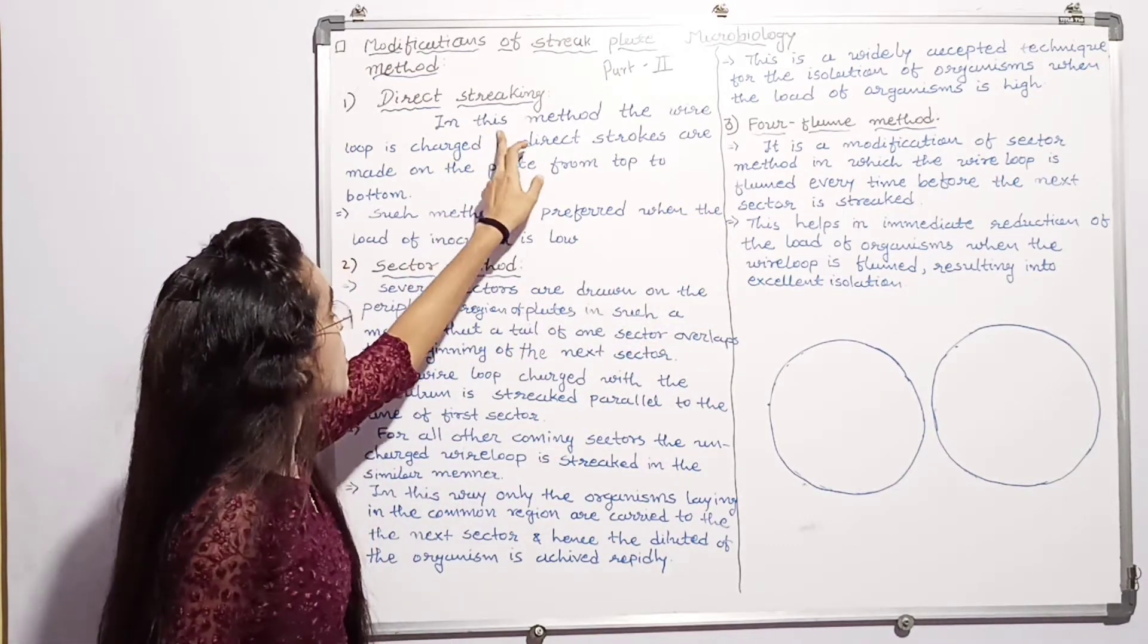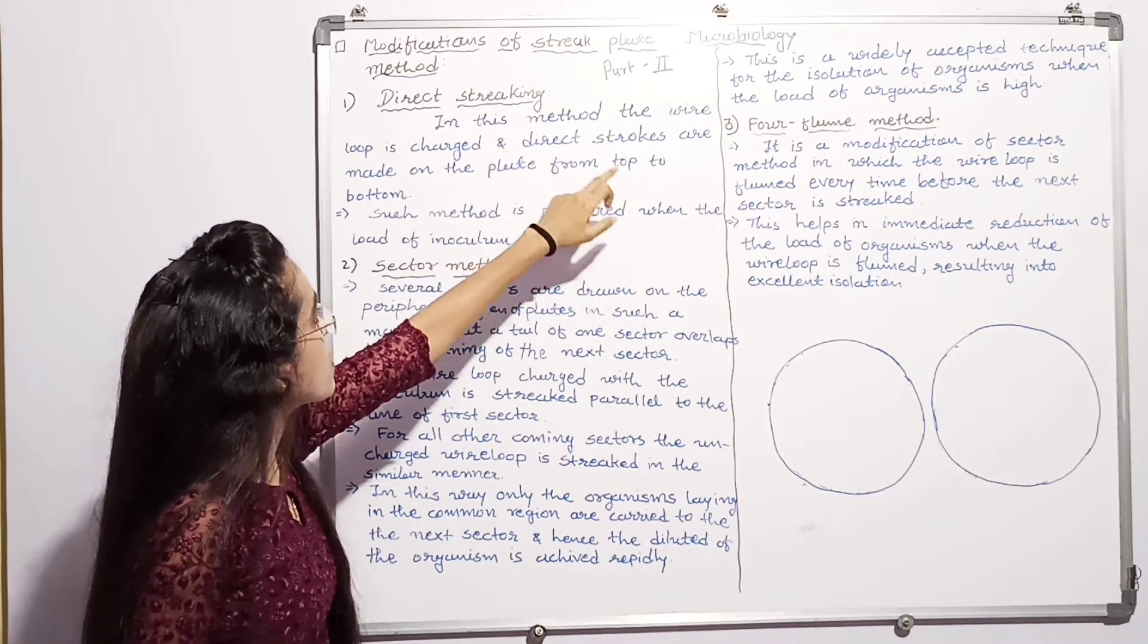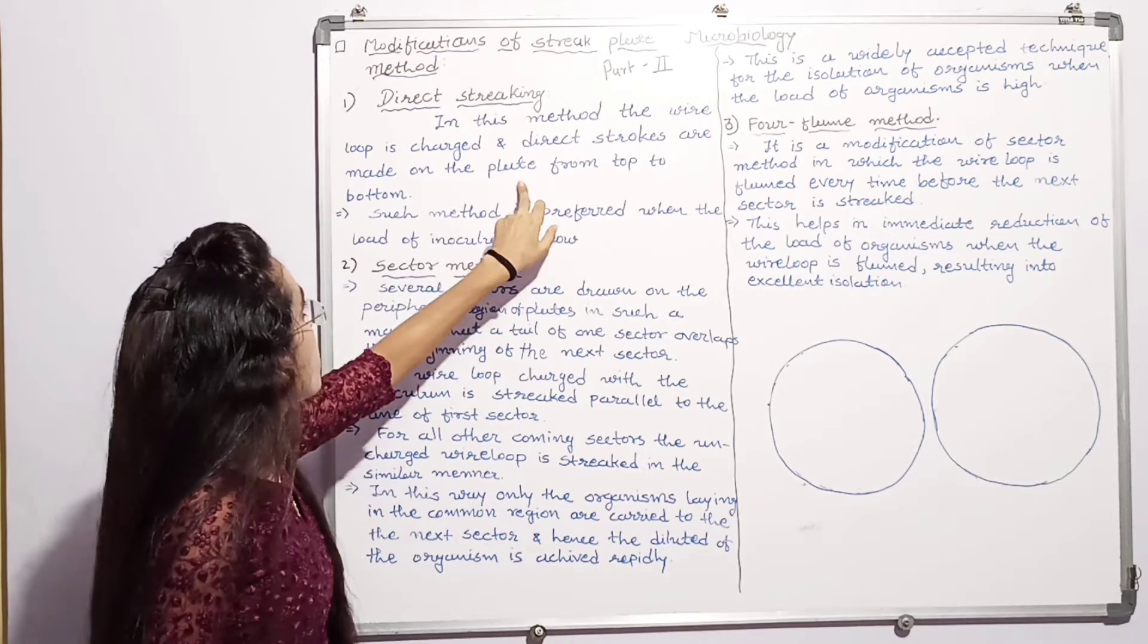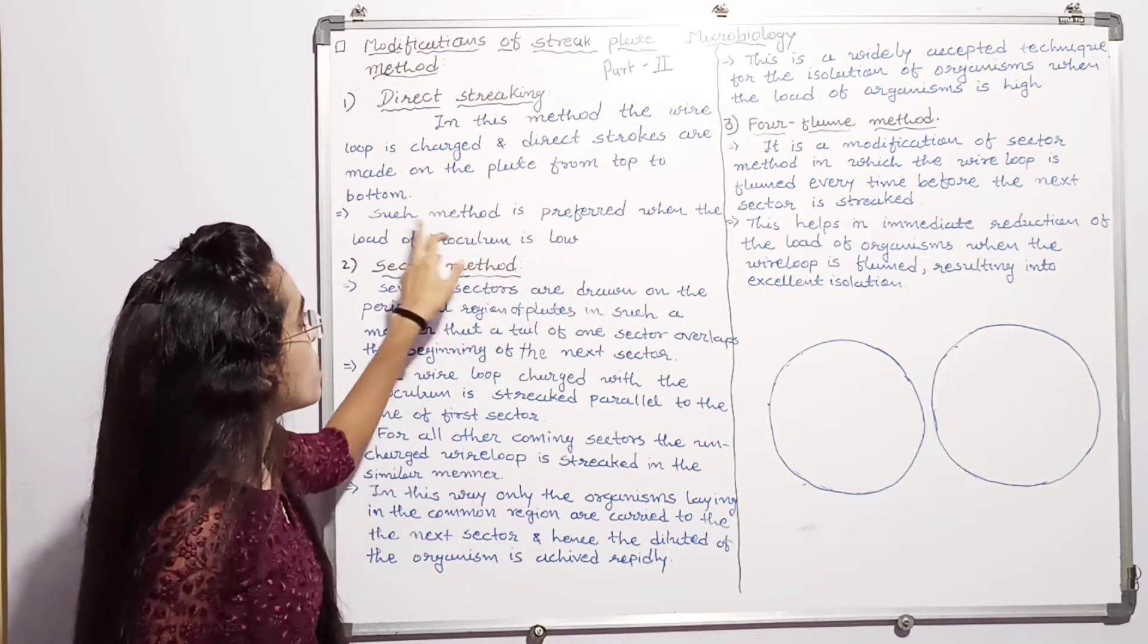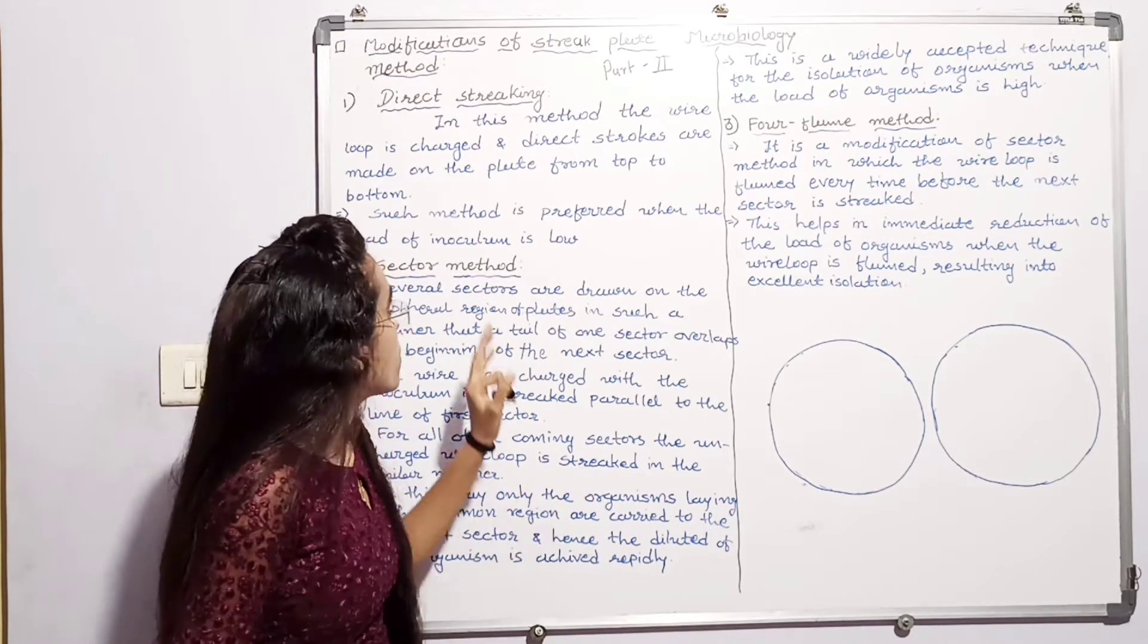First, direct streaking. In this method, the wire loop is charged and direct strokes are made on the plate from top to bottom. Such method is preferred when the load of inoculum is light.